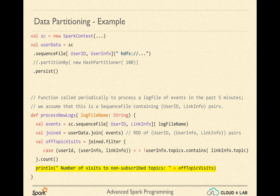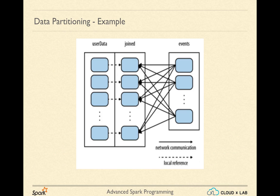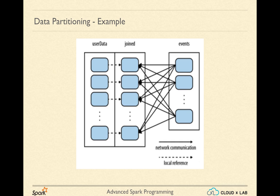Though it gives correct results, it is inefficient. To avoid too much network overhead, we can partition our user data based on user ID. And to make lookups even faster, we can persist it. As you can see from the diagram, the network transfer required to look up user data becomes much less, so joining will become really fast. This is very similar to creating indexes on a database table, except that these RDDs are temporary — you can say they are like temporary tables.